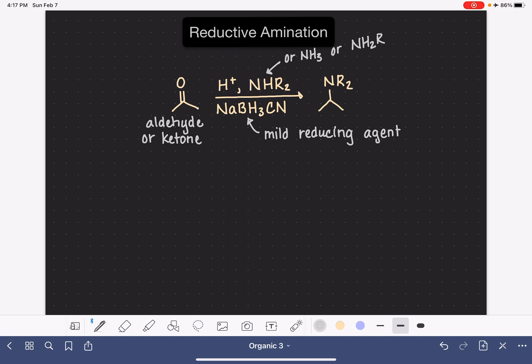And this reaction proceeds via an imine intermediate. So in this reaction, even though all the reagents are put together, it does take place in multiple steps. The acid and the amine, NH2, whatever amine you're using here, will initially make an imine as we have learned. So this is an imine.